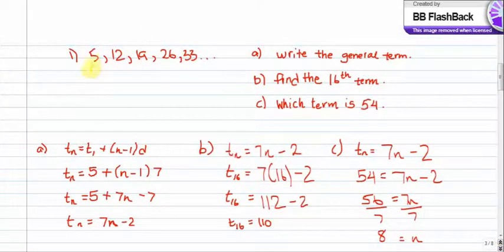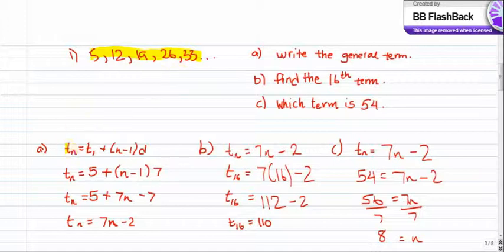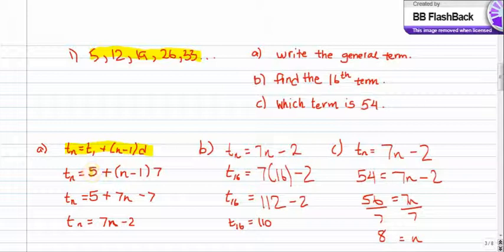Our first question shows a pattern of 5, 12, 19, 26, 33, and so on. The first question is to write the general term. Here's our formula: T of N equals T1 plus N minus 1, multiplied by D. Let's start filling in what we know. The first term of the sequence is 5, and the difference is 7 because you add 7 every time.